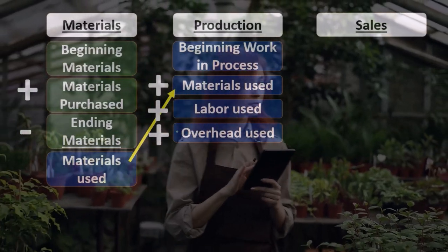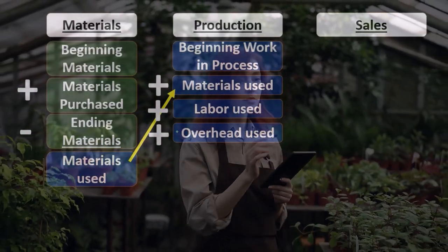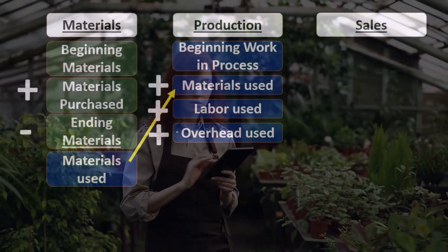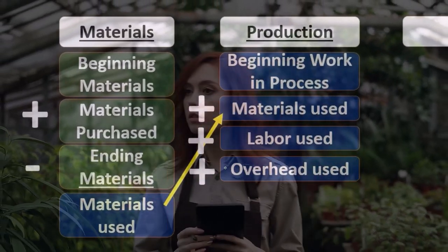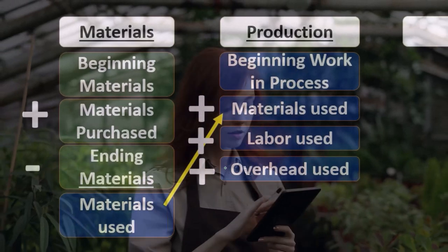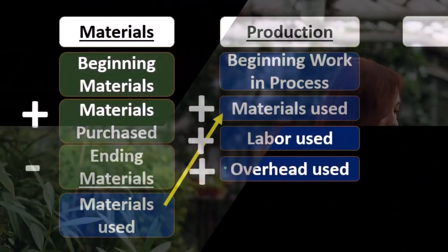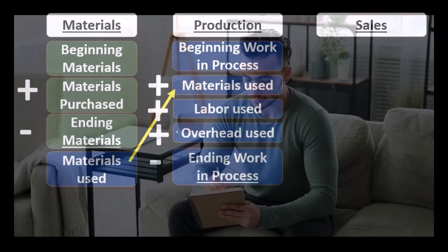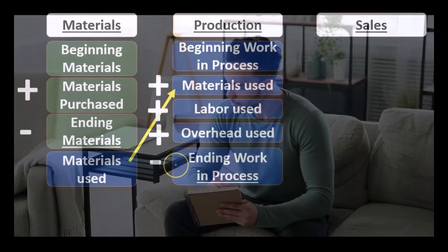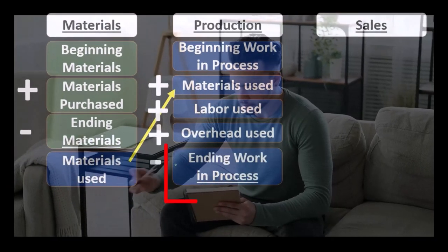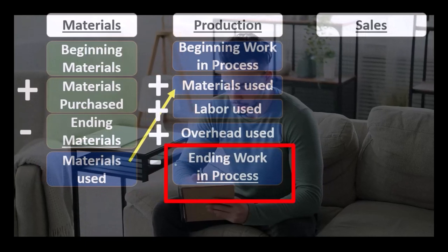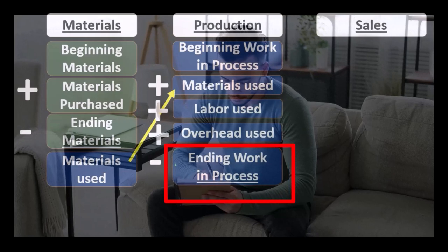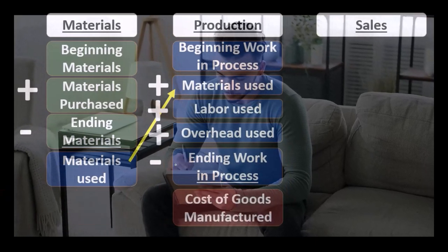For a manufacturing company, some things like utilities on the warehouse and depreciation, we're not going to expense them as we had in the past — we're going to include them in the cost of production, include them in the cost of inventory. We're then going to subtract out the ending work-in-process: what's still there, what's not completed yet, what's still in ending work-in-process and not yet done.